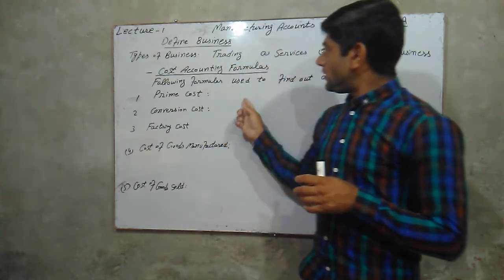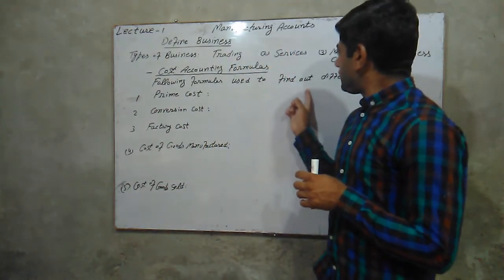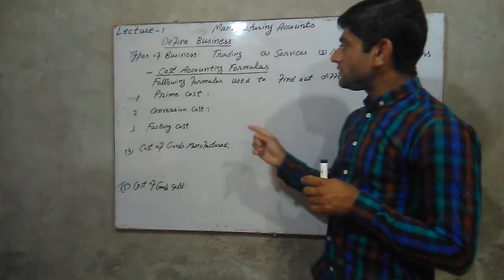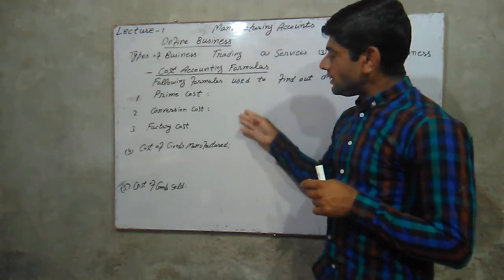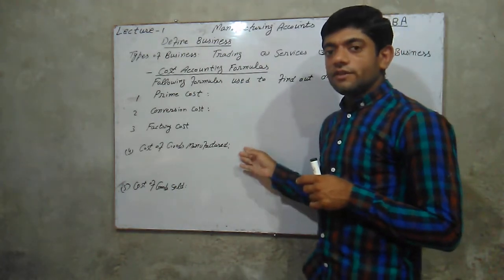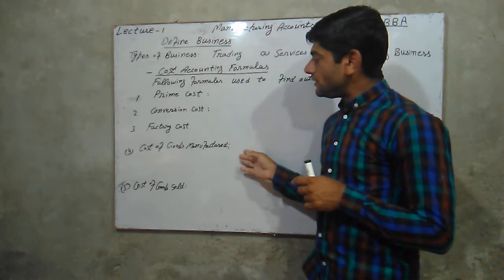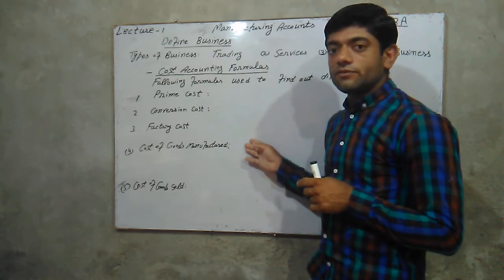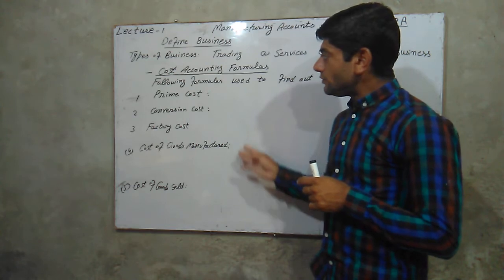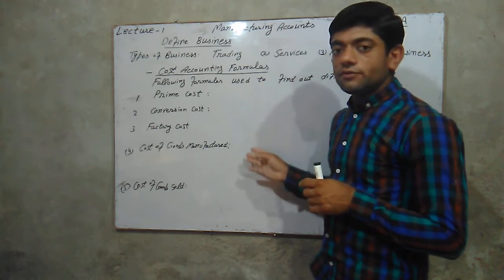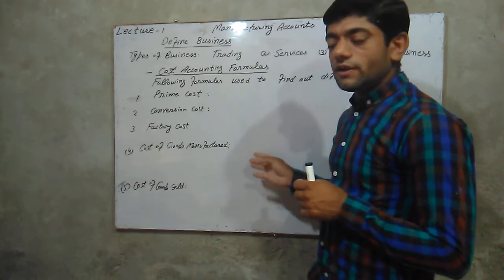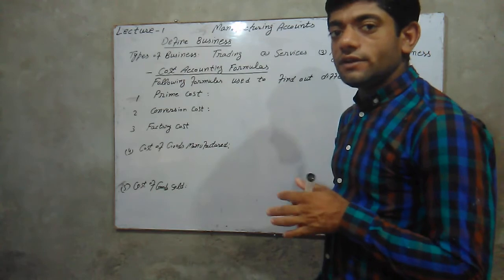The following formulas are used to find out different costs. All these formulas help in calculating the cost of goods manufactured and cost of goods sold. Watch and listen to the lecture carefully.